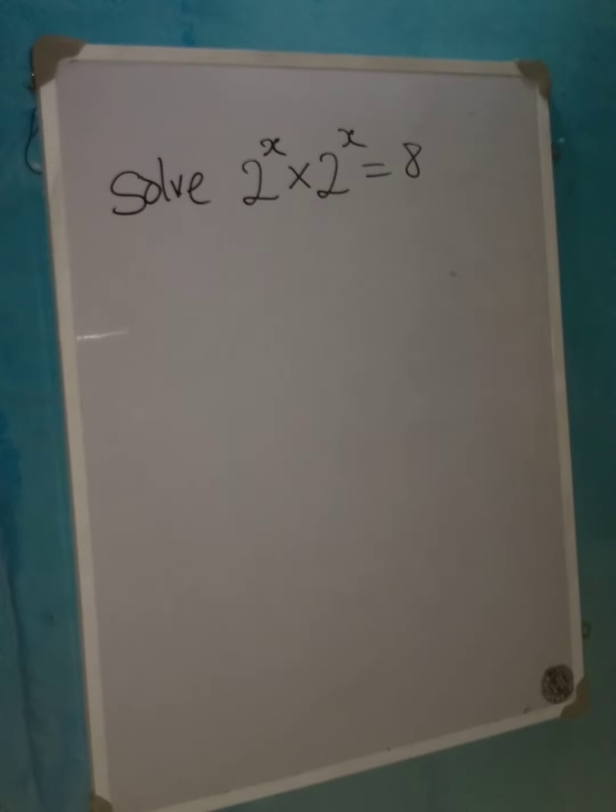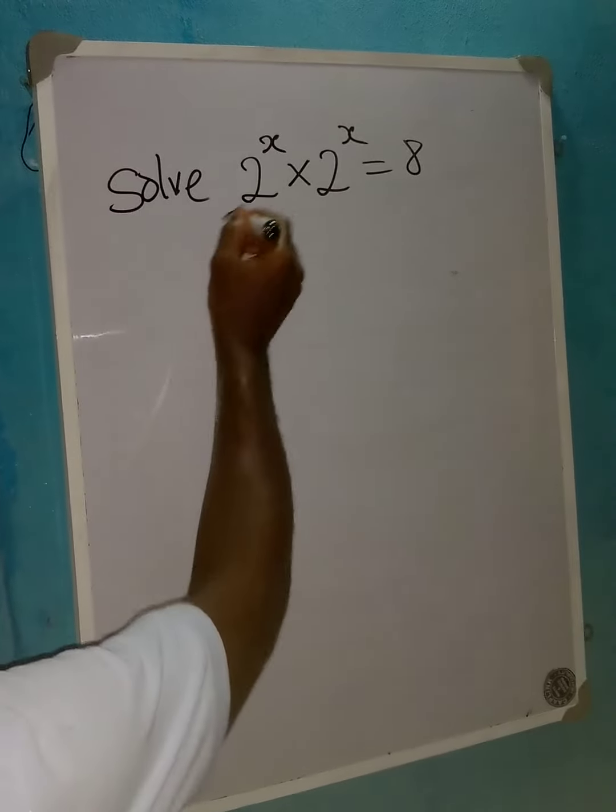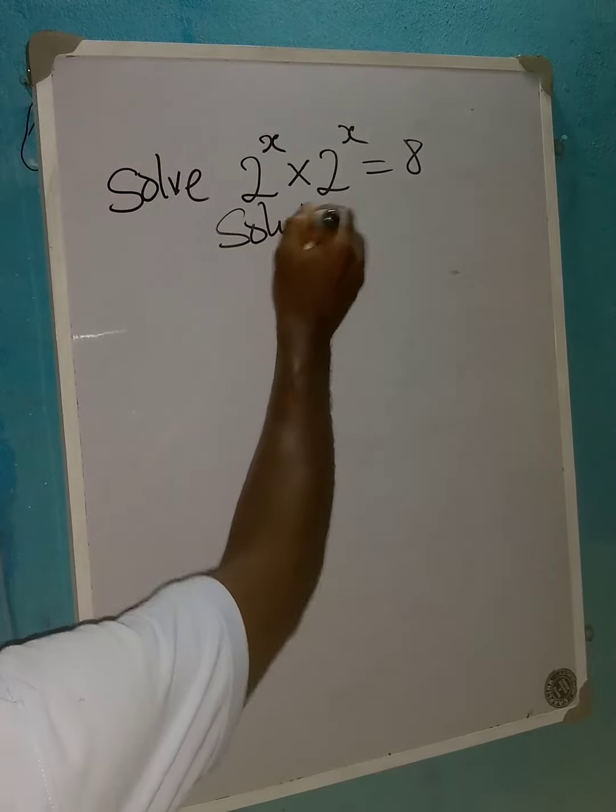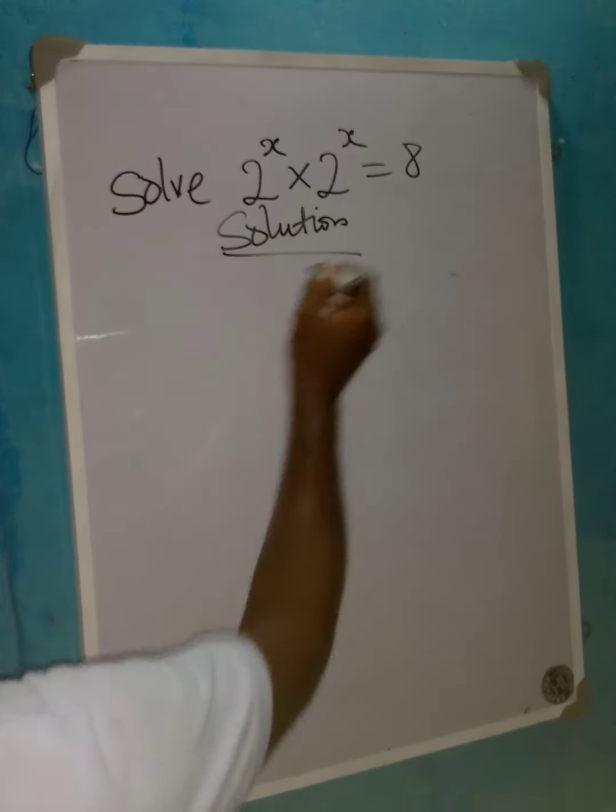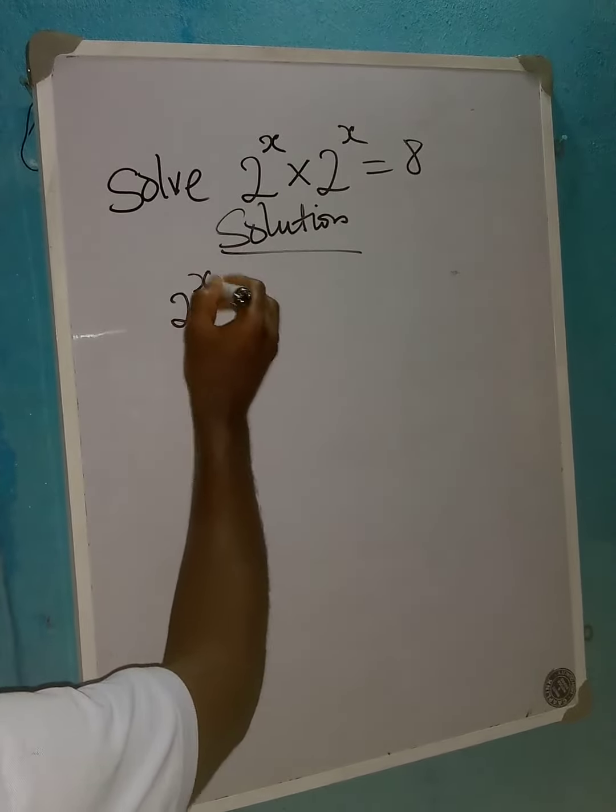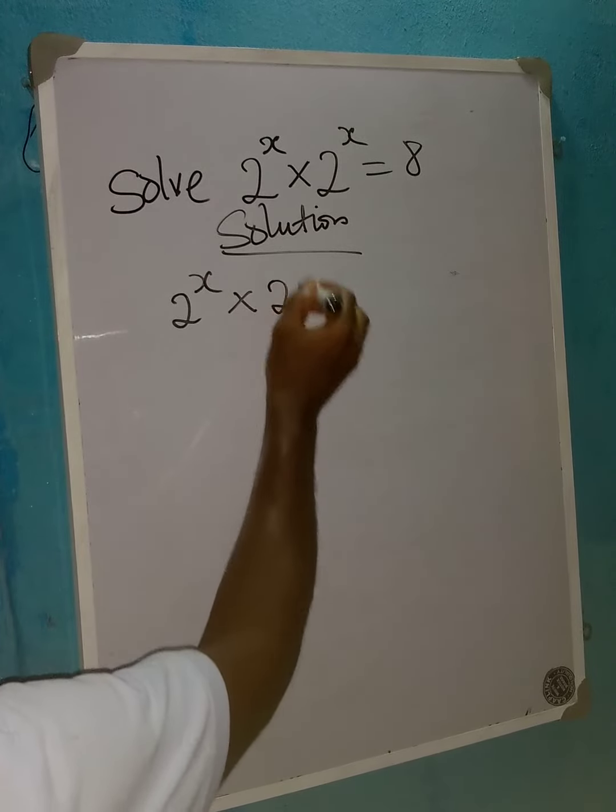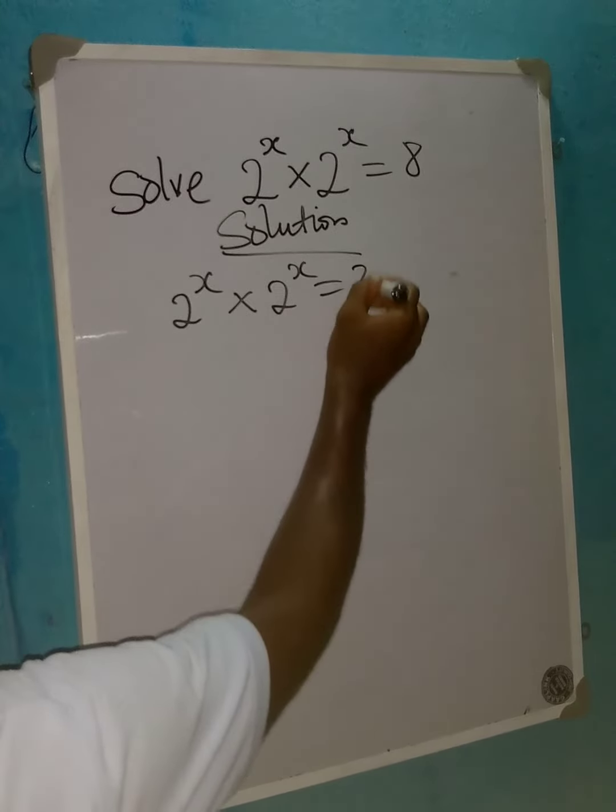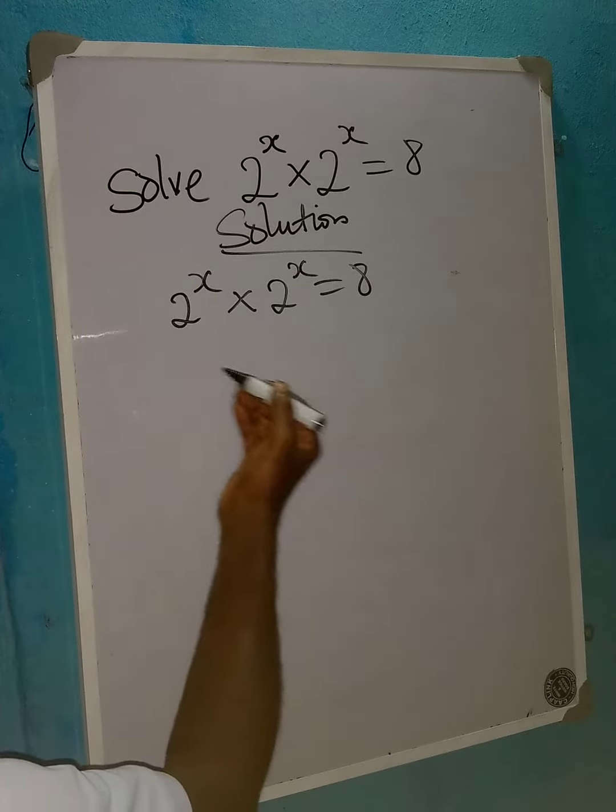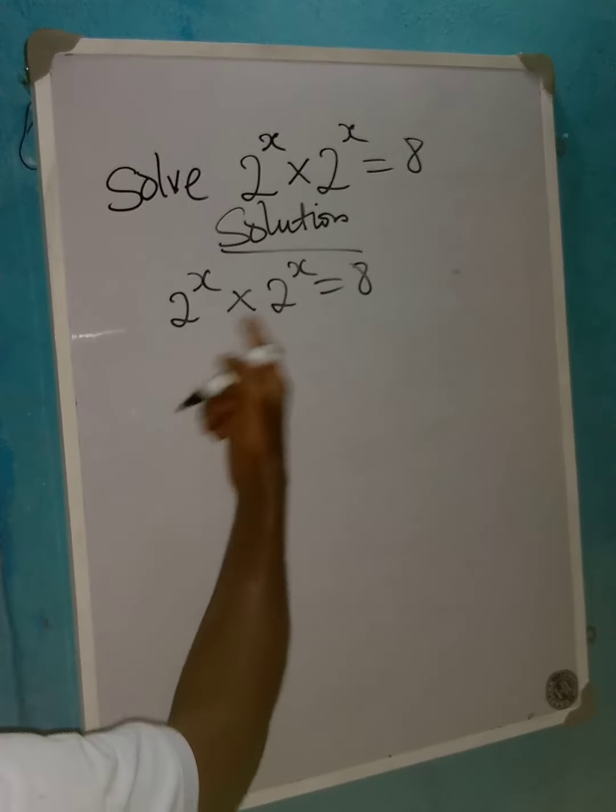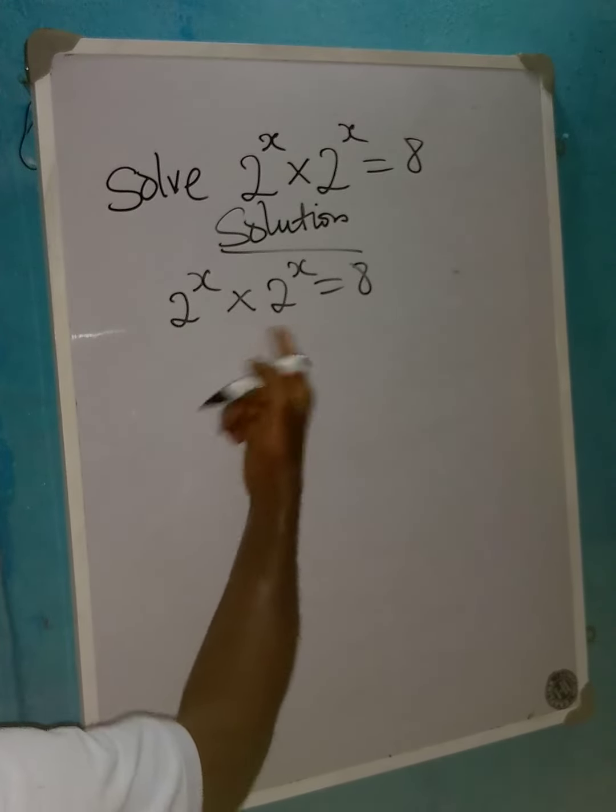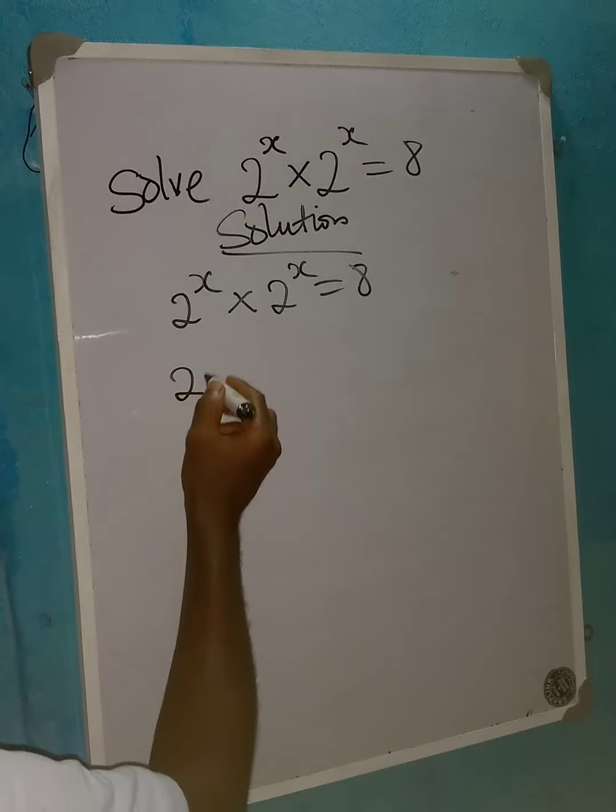Hello everyone, let's solve this simple problem. We have 2 raised to power x multiplied by 2 raised to power x equal to 8. Now these two are having the same base, so I'll pick one of them, then I'll add the exponents because we are to multiply them.